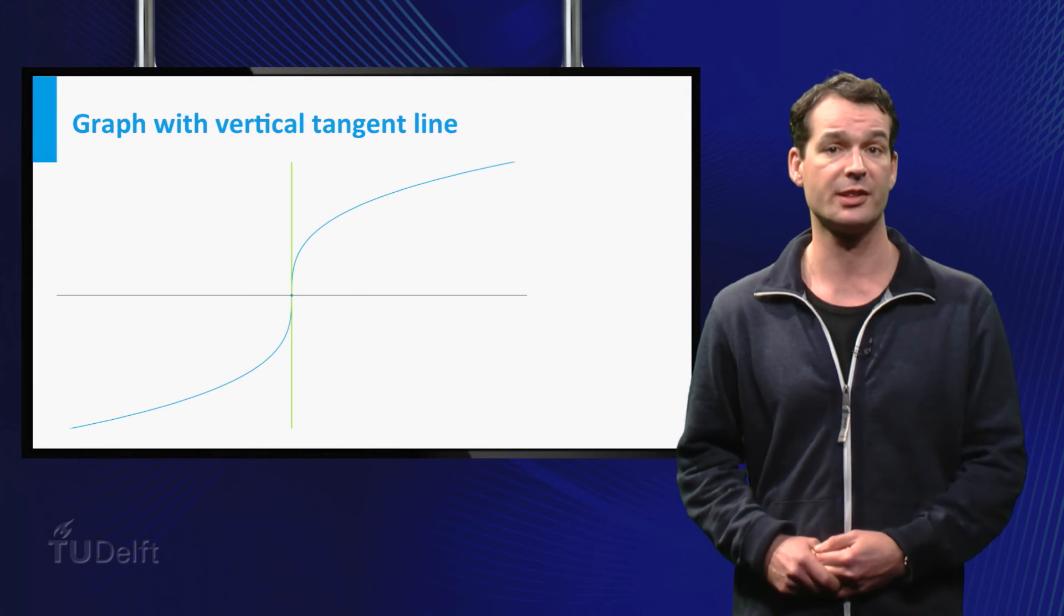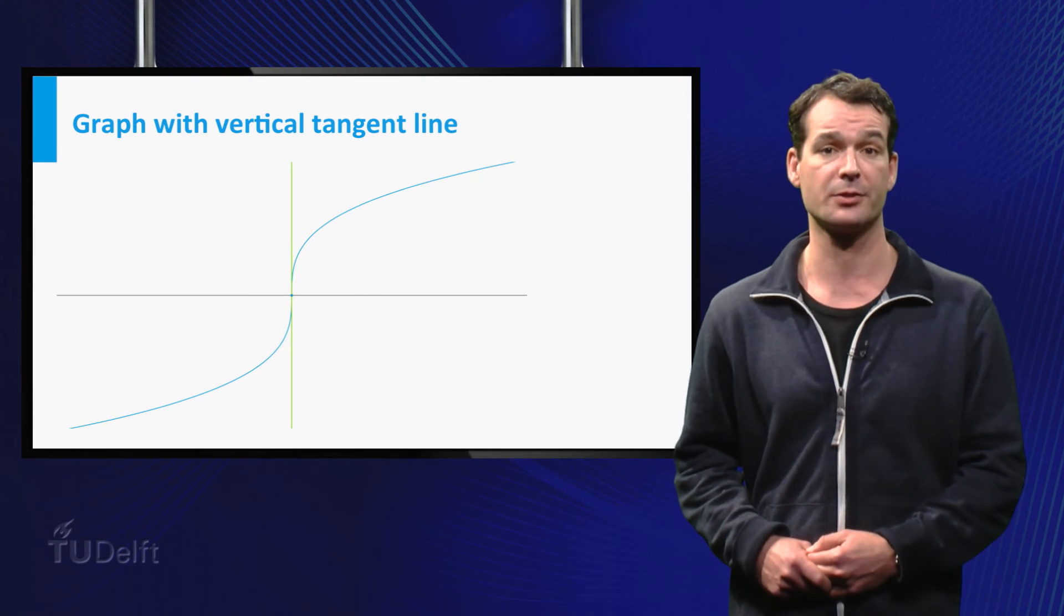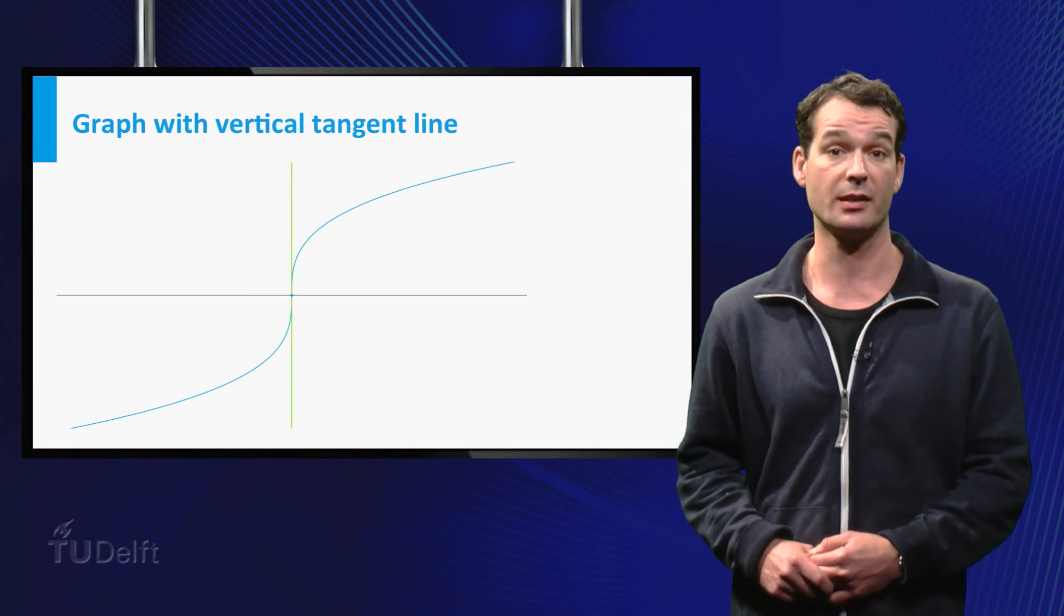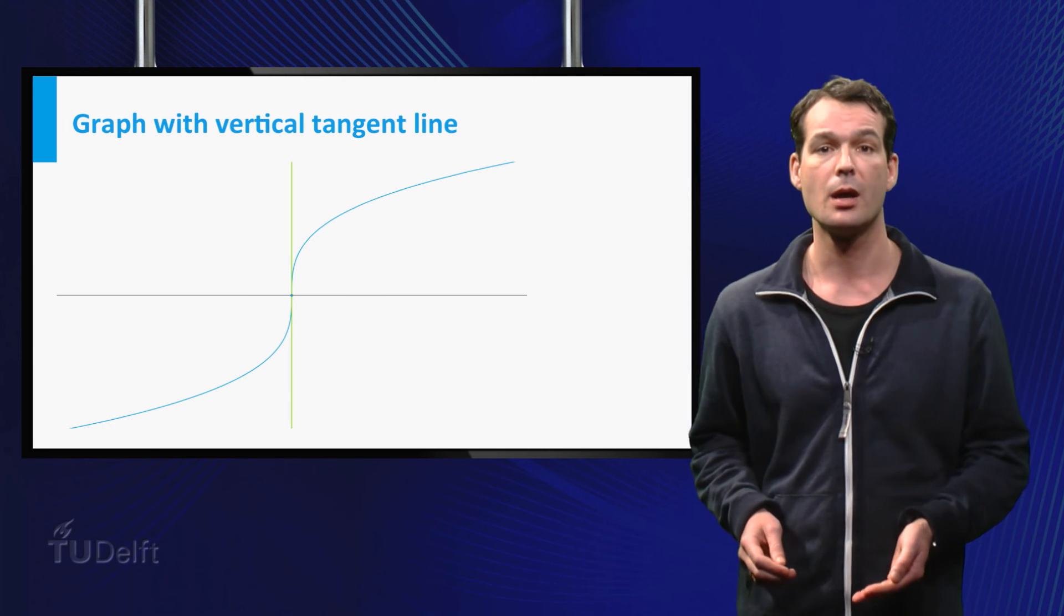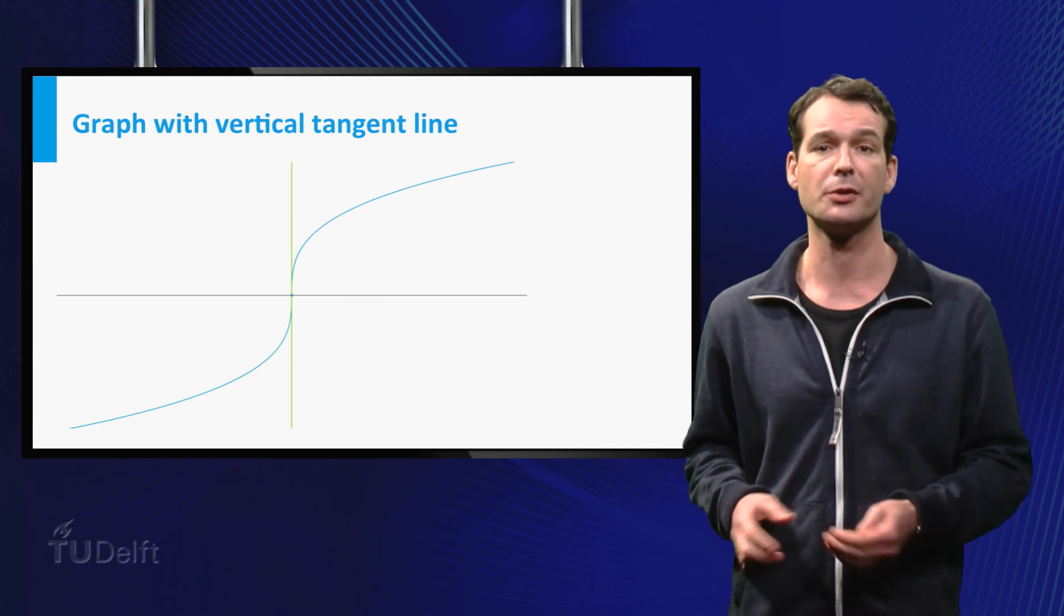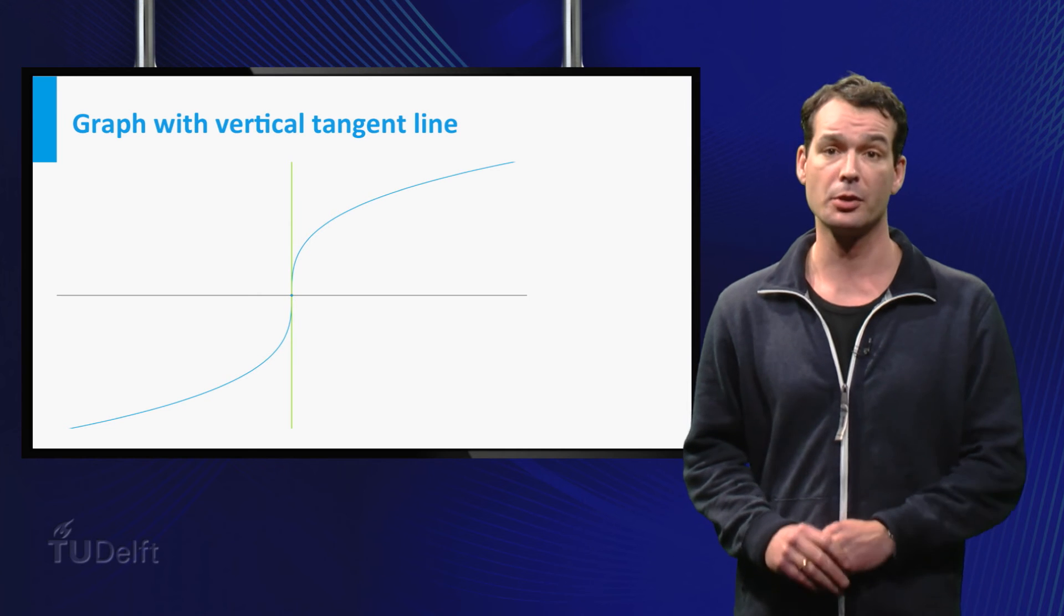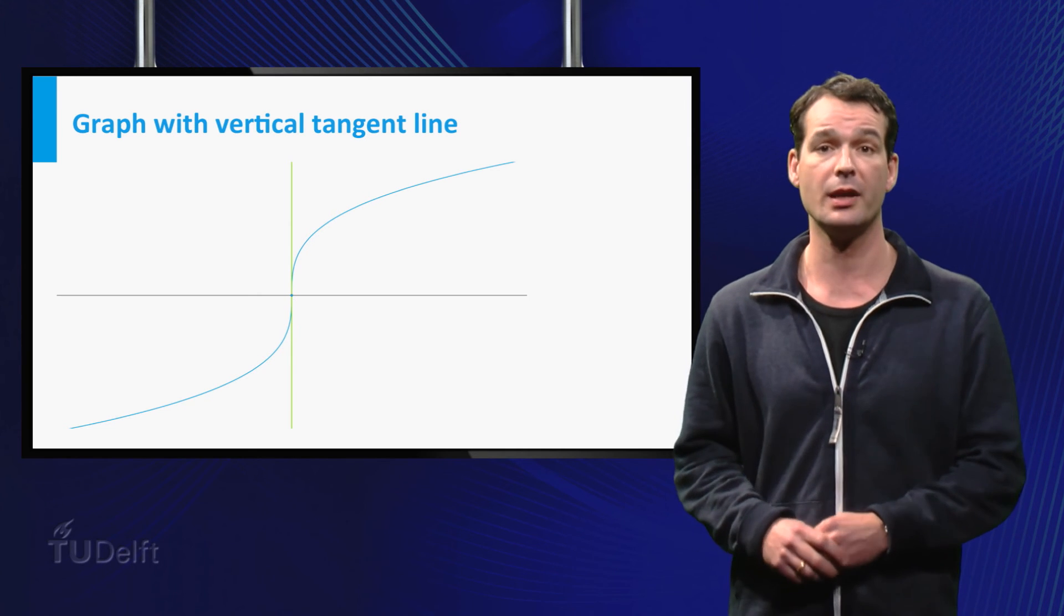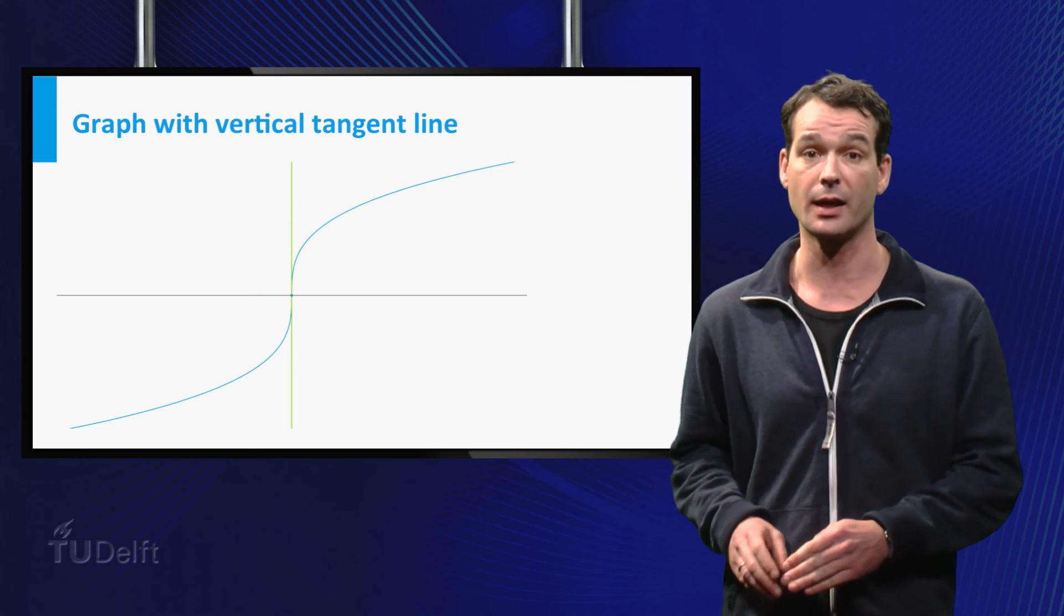Recall that we said that the function is differentiable at A if the limit of the difference quotient exists. That is, it must be a real number. Well, in this case the limit equals infinity which is not a real number. So the limit does not exist and the function is not differentiable at zero even though the graph has a tangent line.